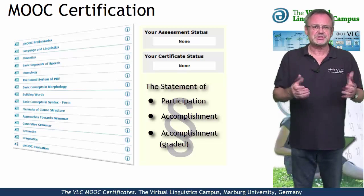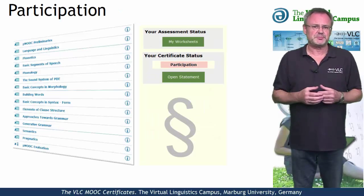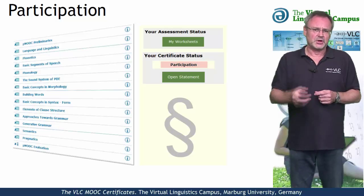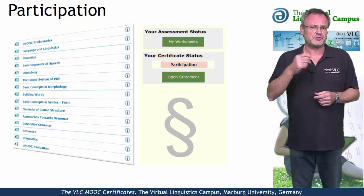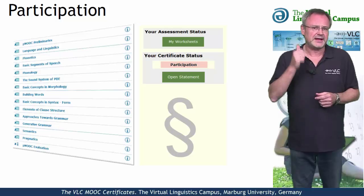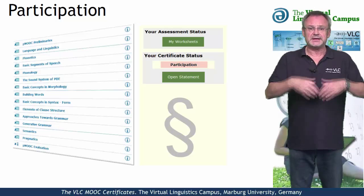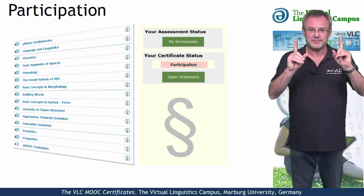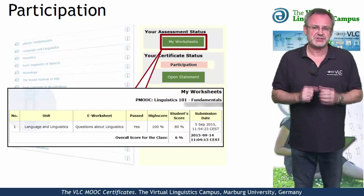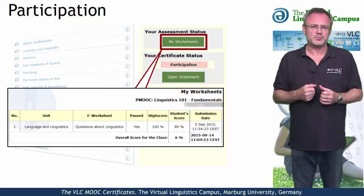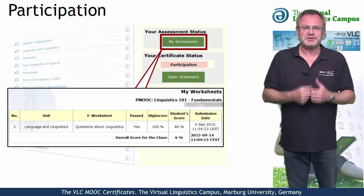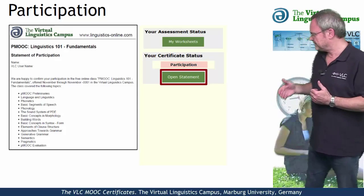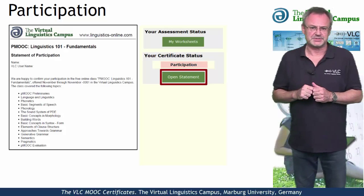The simplest option is the statement of participation, issued by the Virtual Linguistics Campus. You will receive this certificate for regular and active participation, including the submission of at least one worksheet, and it is free. Once you have successfully submitted a worksheet, you will be eligible and can open it by hitting the open statement button.